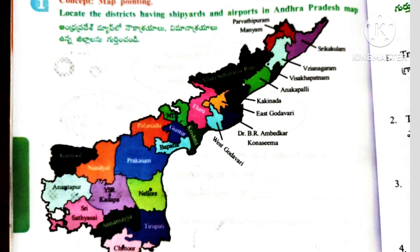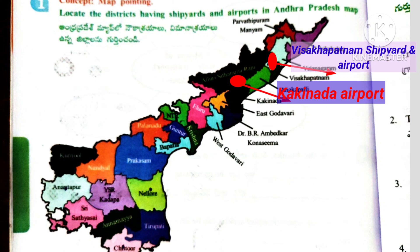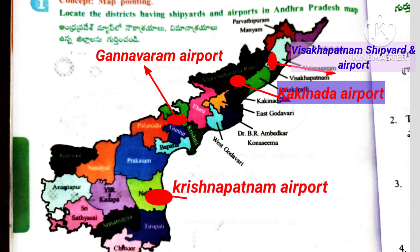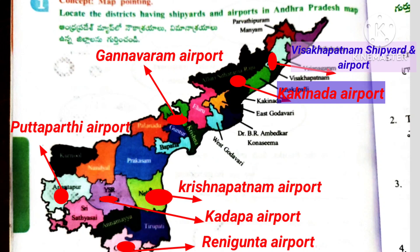Worksheet 5. Here the concept is map pointing. Locate the districts having shipyards and airports in Andhra Pradesh map. Here given Andhra Pradesh map; we have to find the shipyards and airports. This one is Visakhapatnam shipyard and airport. Next: Kakinada airport, Ganavaram airport, Krishnapatnam airport, Kadapa airport, Puttaparthi airport, and Renikunta airport.